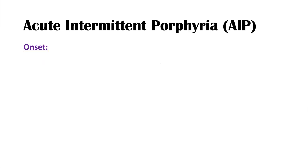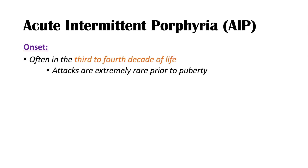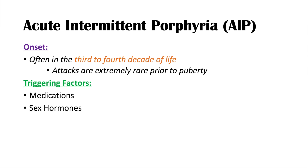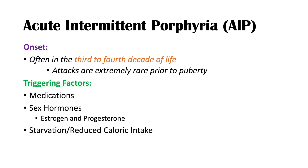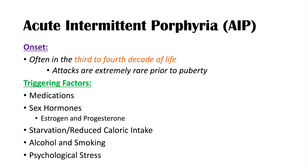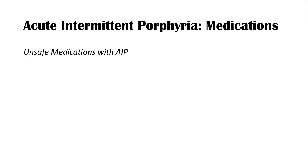AIP has onset generally in the third to fourth decade of life, and attacks are extremely rare prior to puberty. Triggering factors for AIP include medications, sex hormones - specifically estrogen and progesterone, which is why attacks are rare before puberty and why women are more likely to manifest AIP than men - starvation and reduced caloric intake, alcohol, smoking, and psychological stress.